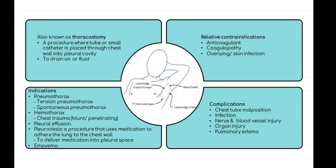The preferred site for chest tube insertion is the safe triangle. This triangle is bordered by the anterior border of the latissimus dorsi, the lateral border of the pectoralis major muscle, the base of the axilla, and the fifth intercostal space, or superior to the horizontal level of the nipple.